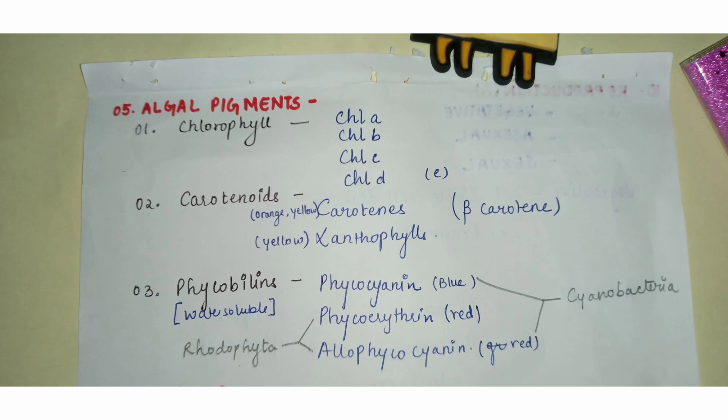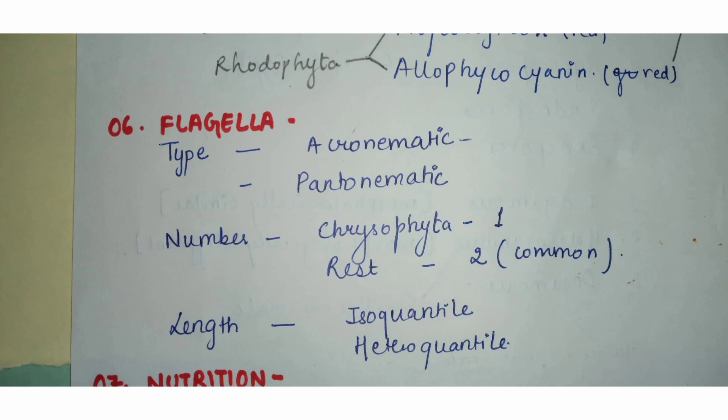Phycoerythrin is also a very major pigment present in Rhodophyta, the red algae. The sixth characteristic is flagella — flagella is a locomotory organ, and it is mostly found in unicellular algal forms.